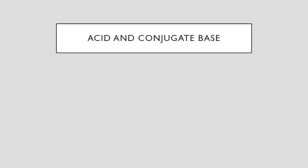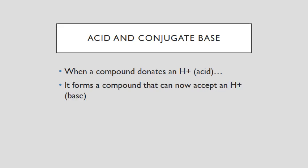Let's look at how acids form conjugate bases. When a compound donates an H⁺ or a proton — which is an acid — it forms a compound that can now do the opposite. It's lost a hydrogen, which means the end result can accept a hydrogen back, making it a base. That thing formed after donating the proton is called the conjugate base. An acid will donate a hydrogen, and whatever's left is the conjugate base of that acid.